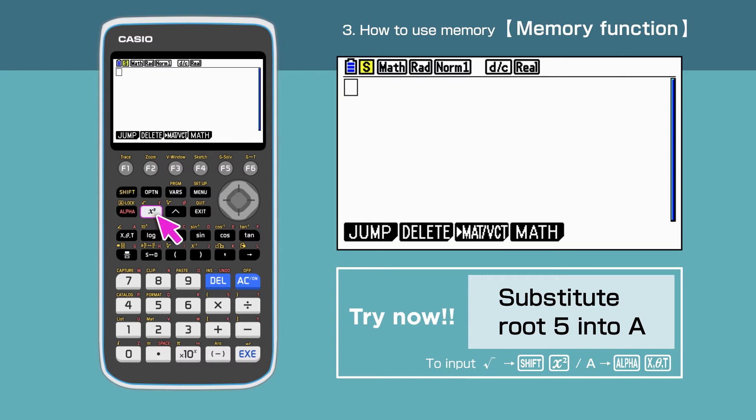Root 5, right side of the cursor, arrow, then select A and press Execute.